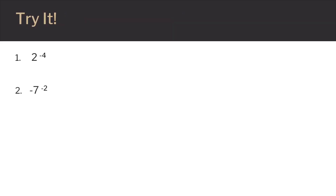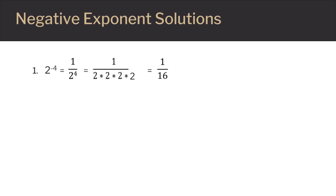Now it's your turn to try. Here are two more examples to try on your own. Go ahead and hit the pause button, work out the problems, and hit play for the presentation to start again. Here is the solution to the first problem: using the negative exponent rule, we can write two to the negative fourth power as one over two to the positive fourth power. It's the same as one over two times two times two times two, which is 16. So two to the negative fourth power is equal to one over 16.